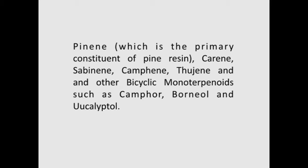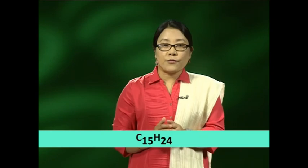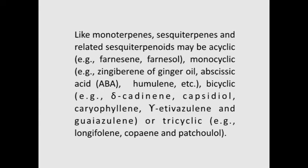Sesquiterpenes contain 15 carbon atoms and consist of three isoprene units with the molecular formula C15H24. Like monoterpenes, sesquiterpenes and related sesquiterpenoids may be acyclic, for example farnesene and farnesol; or monocyclic, for example zingiberene of ginger oil, abscisic acid or ABA, humulene, etc.; then bicyclic, for example delta-cadinene, capsidiol, caryophyllene, gamma-eudesmol and guaiol; or tricyclic, for example longifolene, copaene and patchoulol.